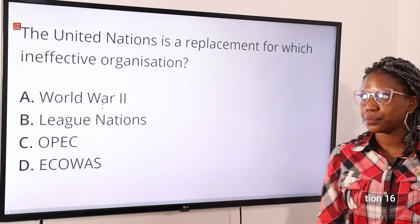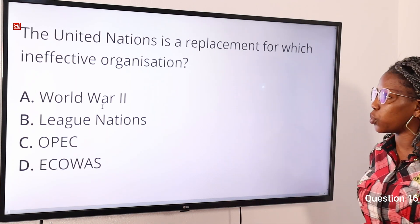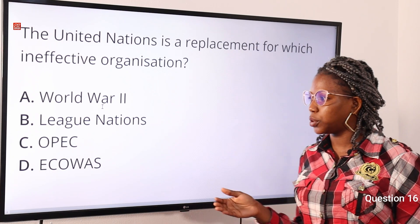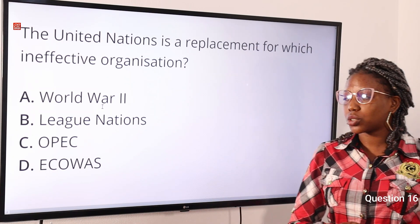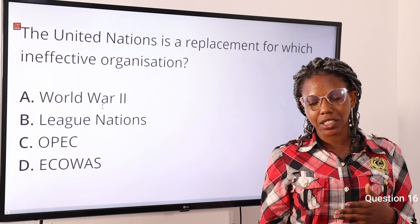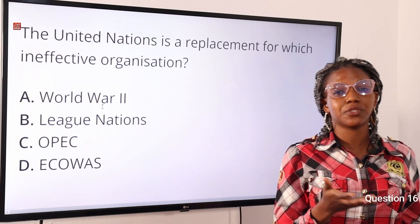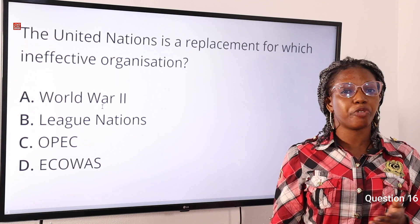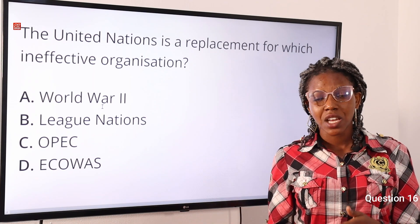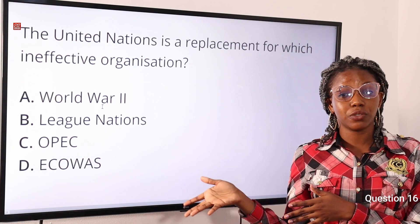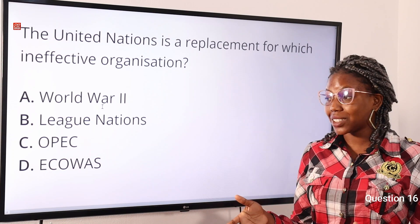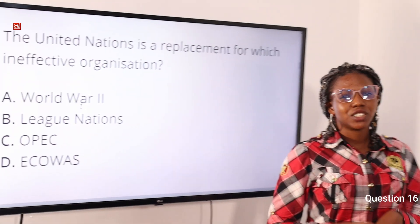Question sixteen: the United Nations is a replacement for which ineffective organization? Option A: World War Two, option B: League of Nations, option C: OPEC, option D: ECOWAS. The answer is option B, League of Nations. The League of Nations was established in 1919 after World War One (1914–1918) to prevent another war, but it failed when World War Two broke out (1939–1945). The United Nations was then established in 1945.